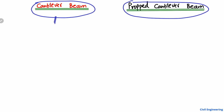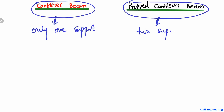First of all, the cantilever beam is the type of beam which has only one support, while the propped cantilever beam is a type of beam which has two supports. This is a big difference between these two types of beam. In a cantilever beam, if I draw the beam, it looks like this.